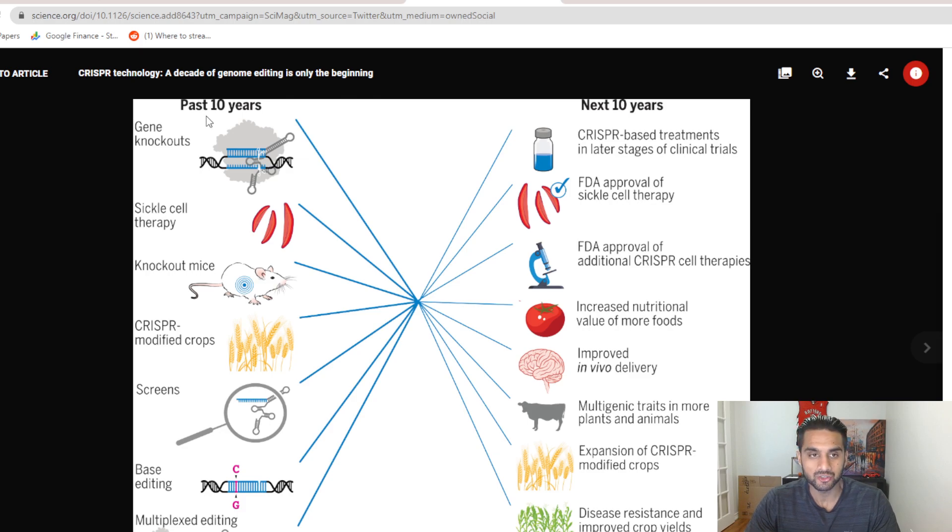If you look at the past history, genome knockouts, sickle cell therapy, we see this with CTX-001, many companies having sickle cell disease programs. Knockout mice, CRISPR-modified crops. We covered that in 2021, a few research papers talking about the importance of agriculture in CRISPR. We've seen it in action in the UK, in Florida. A bunch of places around the world are using CRISPR as a tool for agriculture. Screens, that's more for diagnostics and Mammoth Biosciences.